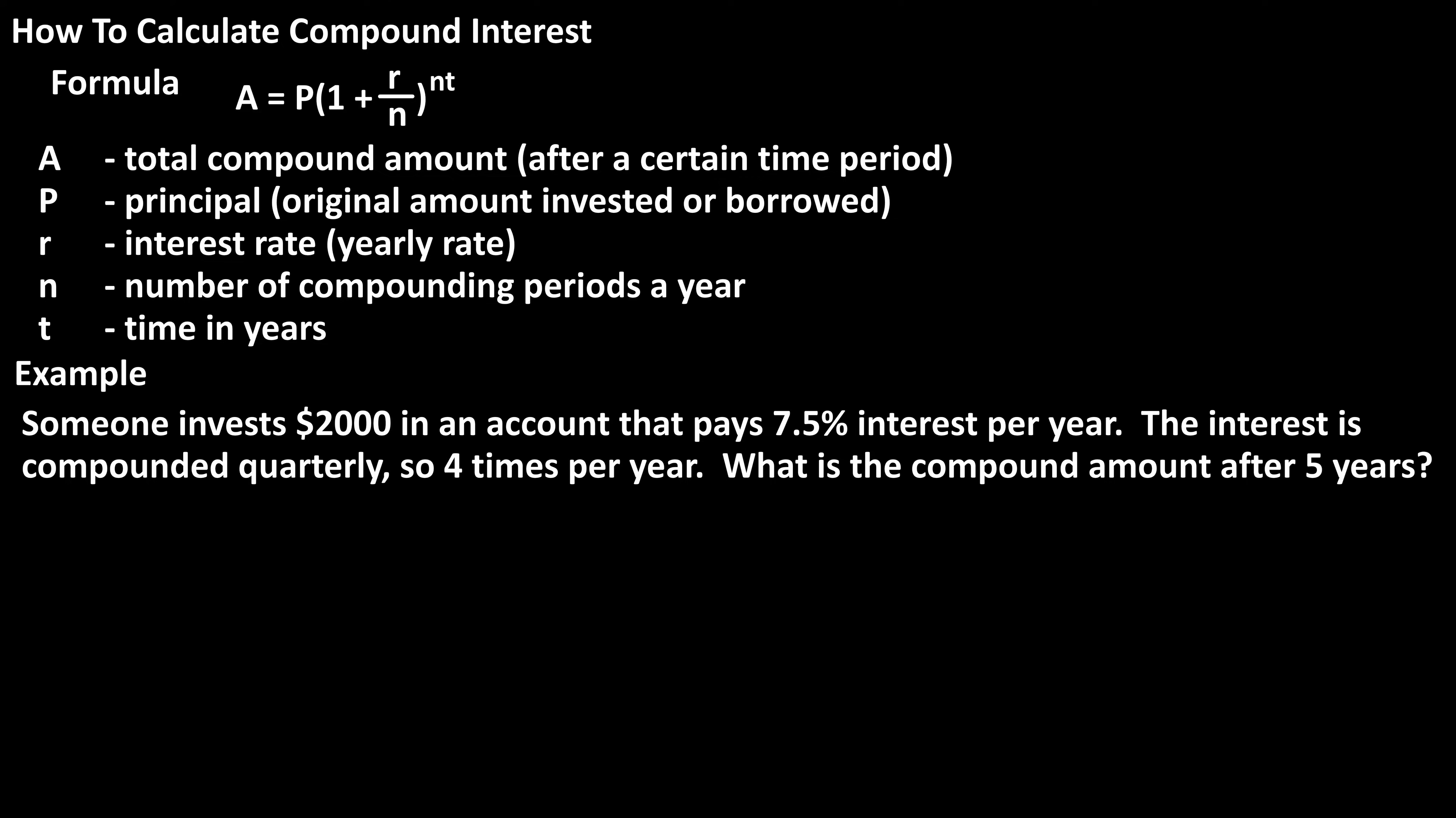Looking at our variables, A is the compound amount, which is what we're calculating, so it's unknown. The principal is $2,000, the amount invested. The yearly interest rate is 7.5%, and we must convert this to a decimal by dropping the percent sign and moving the decimal two places to the left to get .075. N, the number of compounds per year, is 4 because it's compounded quarterly, and T, the number of years, is 5.